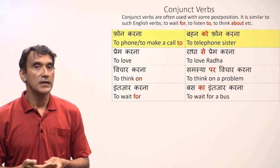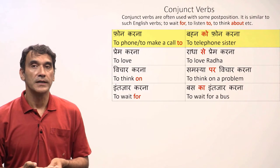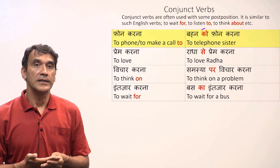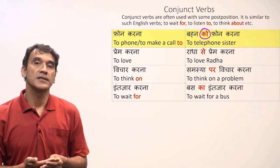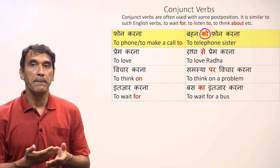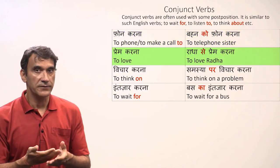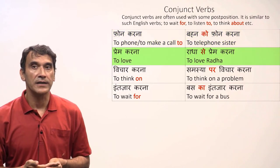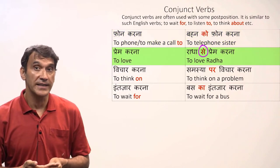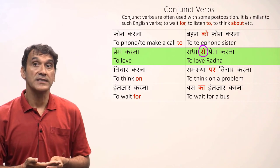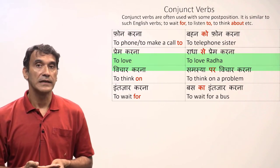'Phone karna', meaning to telephone or to make a phone call, goes with the postposition 'ko'. So to telephone sister would be 'behen ko phone karna'. The verb 'prem karna', meaning to love, goes with the postposition 'se'. That means to love Radha would be 'Radha se prem karna'.